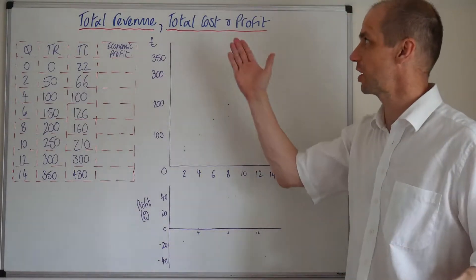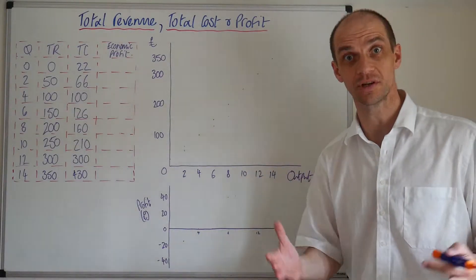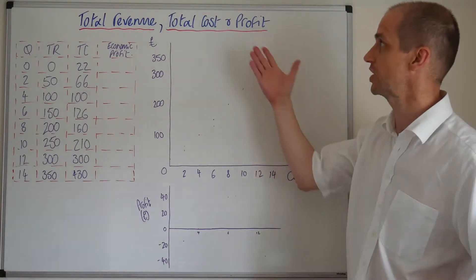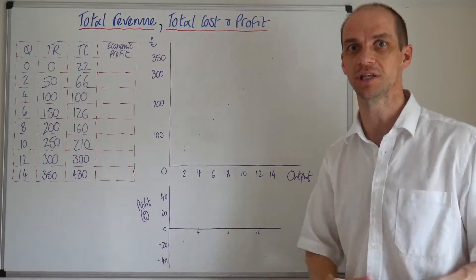Hey guys, so let's now take a look at total revenue, total cost, and how we can actually establish point of profit maximization by looking at TR minus TC.